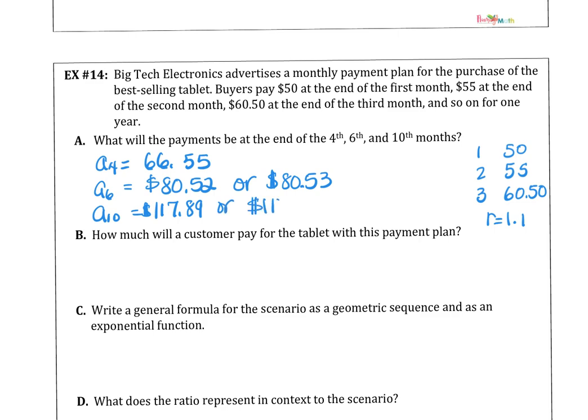If we want to know how much the customer pays for the tablet, with this payment plan, we would want to add up the first term, the second term, the third term, and so on until we got to the twelfth term. So I think I want to write a general rule to figure that out, or if you just continue calculating, I believe it should work out to be $10.69.21.